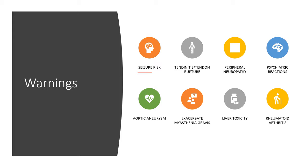Some warnings to watch for: seizure risk is very low but is present, especially if you're already at risk. Tendinitis and tendon rupture can occur — this ties back to the aortic rupture concern, as this antibiotic can affect tendons and blood vessels, putting them at risk of failure or rupture. The risk is extremely low, but this is why levofloxacin is considered a stronger antibiotic that should be reserved for more serious infections, and it sits lower on the list of preferred medications.